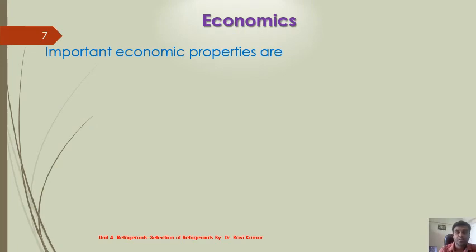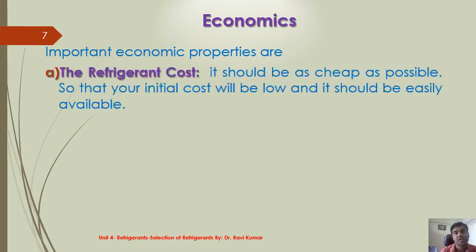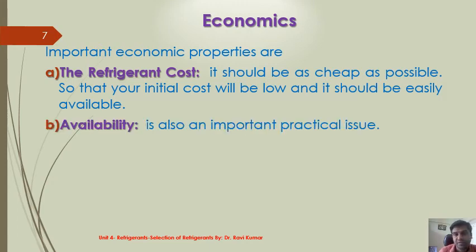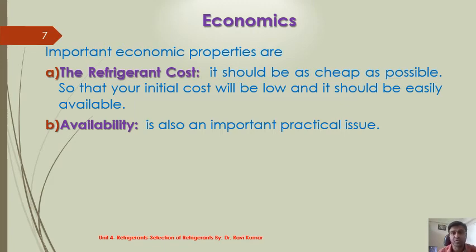The third property category is based upon economics. The important economic properties are, first, refrigerant cost — it should be as cheap as possible so that the initial cost will be low — and it should be easily available. This is an important practical issue for refrigerant selection, because if you select a refrigerant that is not available you will not be able to design the system properly.